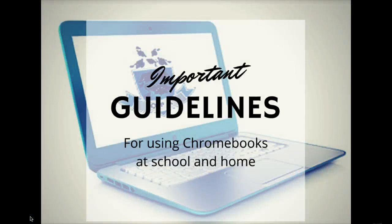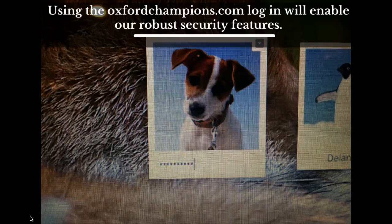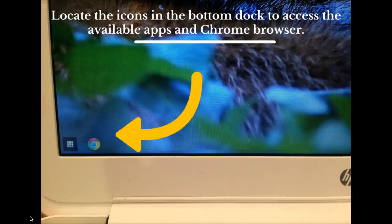Every Oxford student has been issued an OxfordChampions.com email address. That email account can be accessed with firstname.lastname at OxfordChampions.com. When you open your Chromebook, you will be greeted by a profile picture that was likely created by your child. If your child cannot remember his or her password, or is having trouble logging into his or her email account, please have your child speak to their classroom teacher so that password information can be made available or, if necessary, reset.